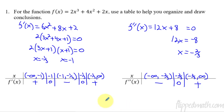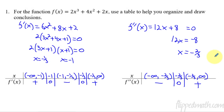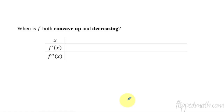Here's the sign chart that you should have been able to come up with. We can draw conclusions about what's going on with this function. We know that here the graph is increasing, then decreasing, then increasing — therefore we have a maximum at x equals negative one and a minimum at x equals negative one third. We also know it's concave down on one interval and concave up on another, so we have a point of inflection at x equals negative two thirds. Sometimes you'll have a question that asks: when is f both concave up and decreasing?